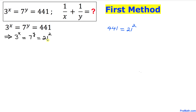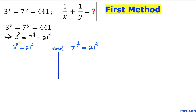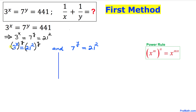Therefore our equation could be written as 3 power x equals 7 power y equals 21 squared. Now we can write this as 3 power x equals 21 squared, and the other part as 7 power y equals 21 squared. Now let's take the power of y on both sides of the first equation.